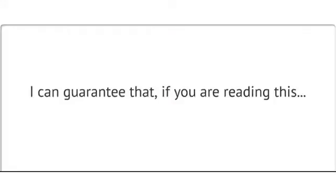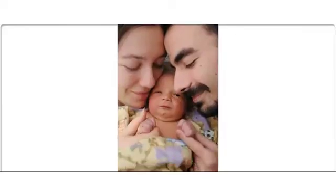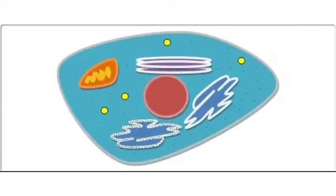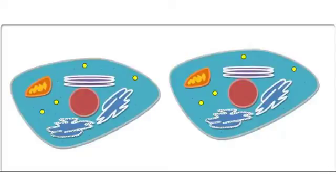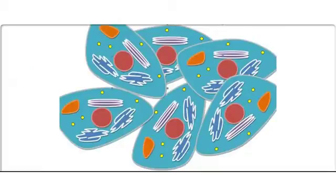I can guarantee that if you are reading this, then you are bigger now than you were when you were born. Your increase in size is due to cell division — you have more cells now than you did then. All life is made of cells. The lifespan of a cell is finite; that single cell will live for a certain period of time and then either divide or die. When cells divide, what typically happens is that one cell divides into two even daughter cells, and those new cells will then themselves grow and prepare to divide into even more cells.